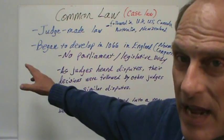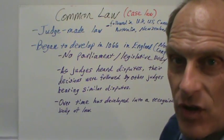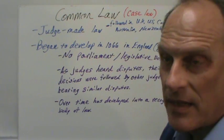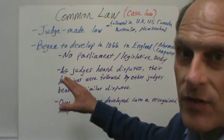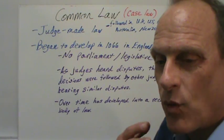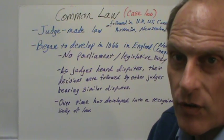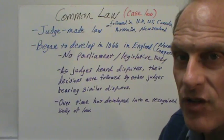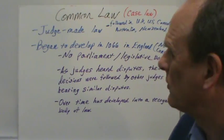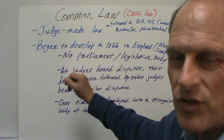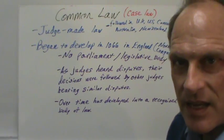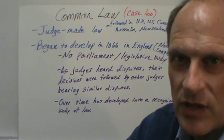This thing we call the common law began to develop with the Norman conquest in 1066. As they took over the country and began to solidify the way law was made and decided, they took over local customs and established a more nationwide approach of principles of law. And of course, there was no parliament, no statutes, no ordinances, because there was no legislative body.